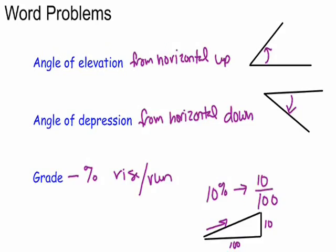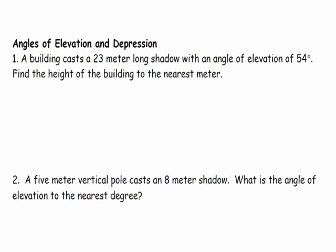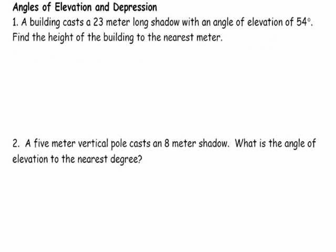All right. So let's actually tackle some word problems. The key to a word problem is drawing the correct picture. Really, that's the key. And every single one is going to start with a right triangle of these word problems that we're going to solve with trig. So I have a building. It casts a 23 meter long shadow with an angle of elevation of 54 degrees. All right. So I have a building. It has a shadow. And there is an angle of elevation from the horizontal up. So here is my right angle. Here is my building. I need to find the height of it. So that's going to be my X. The shadow is 23 meters long. And my angle of elevation is 54 degrees, the one that is from the horizontal up.